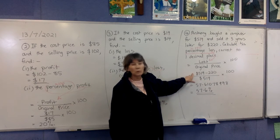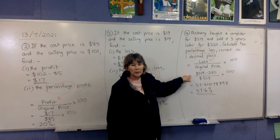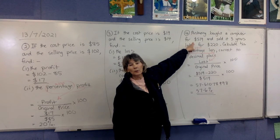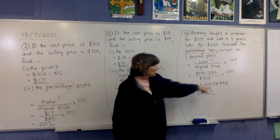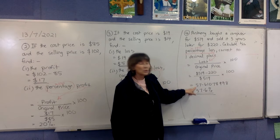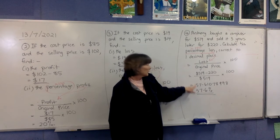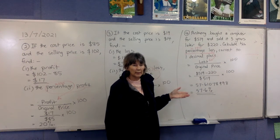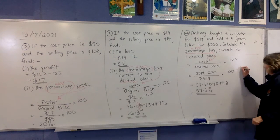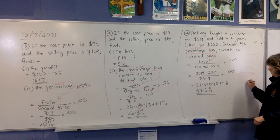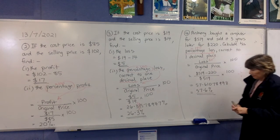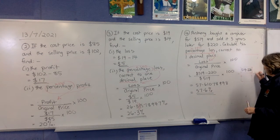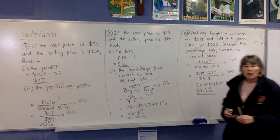Rather than working out the subtraction just yet, write it in the fraction so you don't make a mistake. On the bottom we write the original price — the price he bought it for originally, $519. You can enter this directly into your calculator: open up a fraction, and on the top put $519 minus $220, then arrow down and put 519 on the bottom, then times by 100.